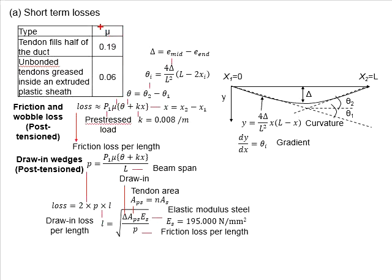These coefficients of frictions can be referenced from the table here, depending on the conditions. If the tendons fill half of the ducts, the mu will be considered as 0.19. In the case that mechanisms is being used to reduce the effects of the friction, for example, the unbonded tendon greased inside an extruded plastic sheath, the coefficients of friction can be reduced to 0.06.